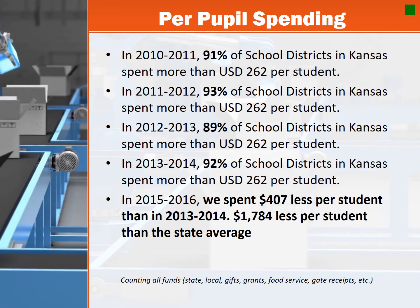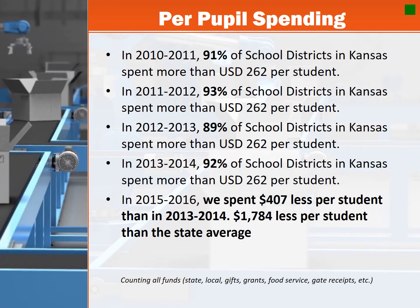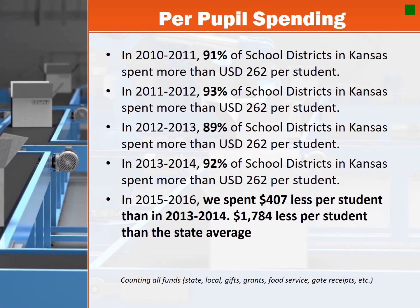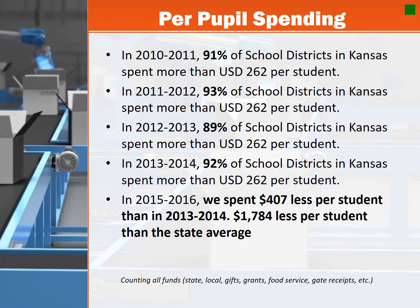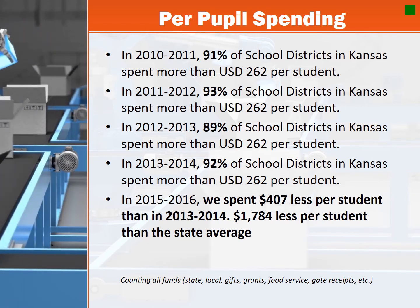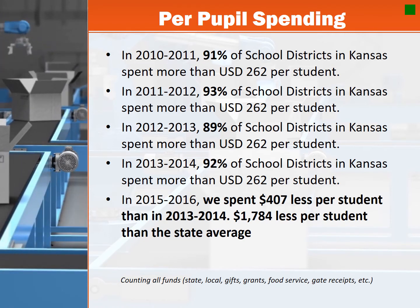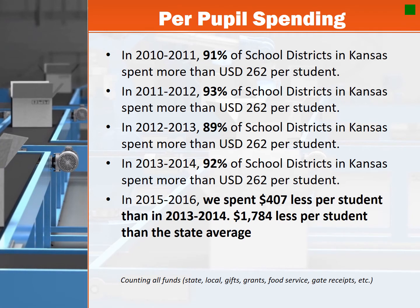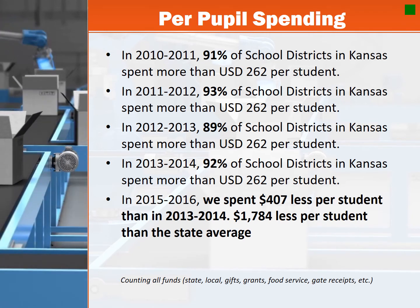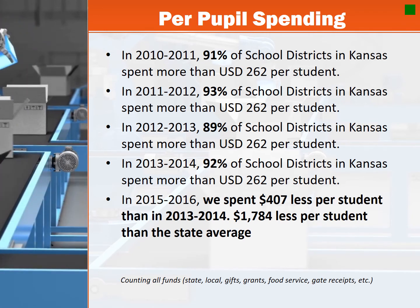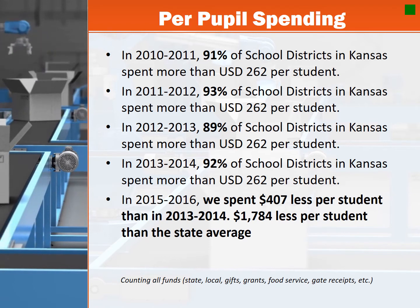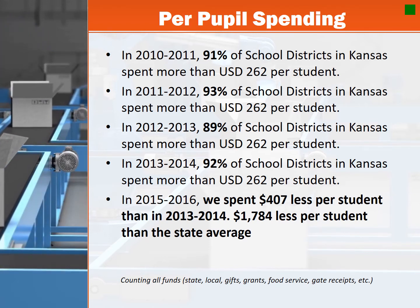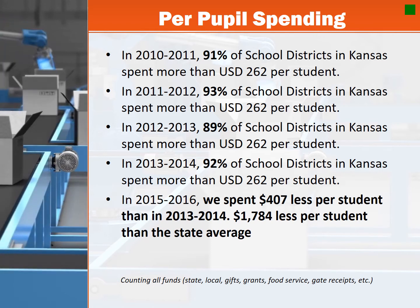In 2015-2016, although we do not have the comparable data, we spent $407 less per student than in 2013-2014 — in fact, about $1,700 less than the state average. This is due to the block grant. In other words, the money received in 2014-2015 is the same allocation as we will receive next year. And when you grow in enrollment as we have, if you have the same dollars, that means we actually spend less per student.